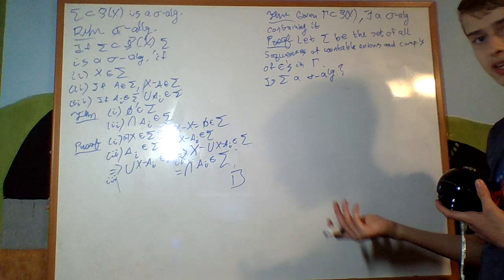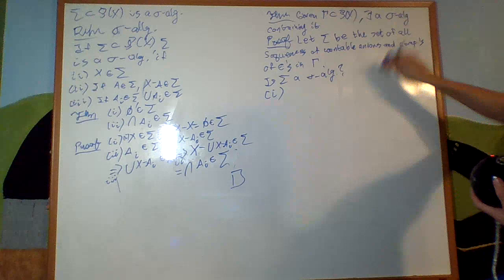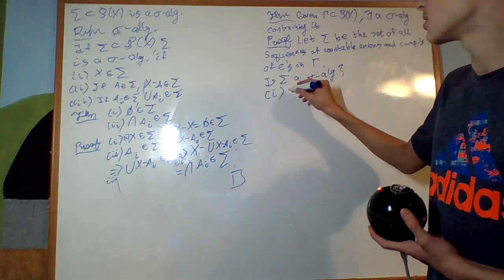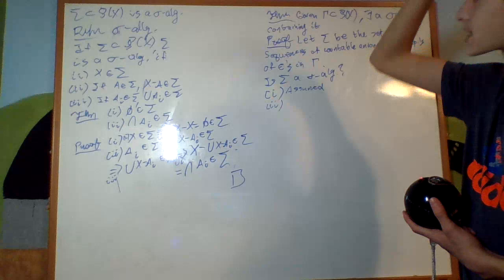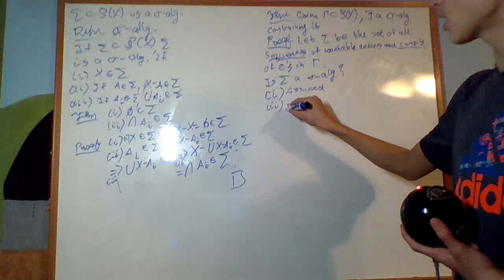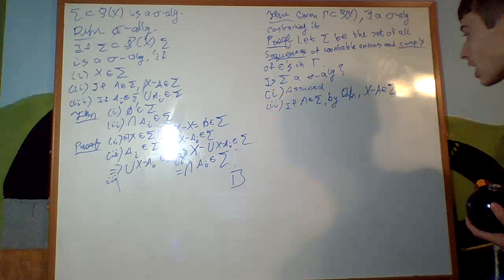First condition: is X an element of the sigma algebra? We need to assume that gamma contains X, because it's not guaranteed otherwise — so assumed. Number two: if A is an element of sigma, then X minus A is an element of sigma. That's trivial because sigma is all sequences of complements. So if A is an element of sigma, by definition X minus A is an element of sigma — you just add to that sequence.